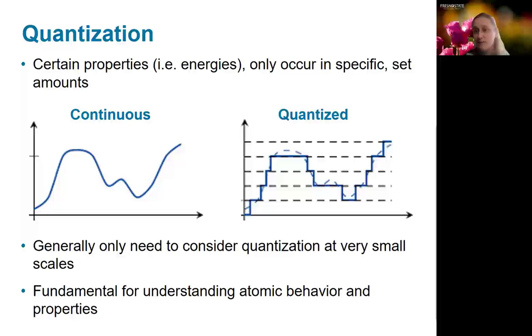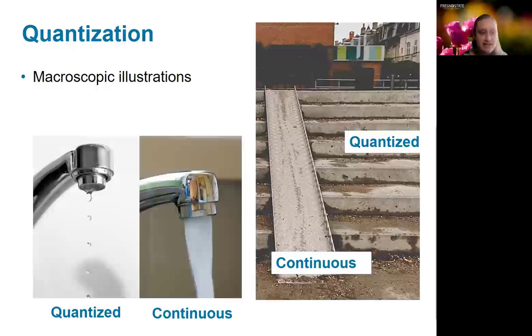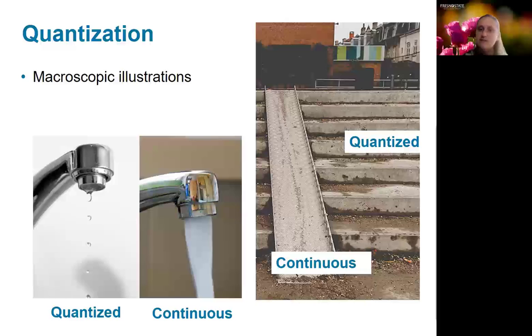And understanding quantization is really fundamental to understanding atomic behavior and properties. Just to give you a better sense of what quantization really means, we can think about a couple of macroscopic examples. So the first one here is a faucet, which is dripping. In that case, only certain volumes are allowed. You're not going to see sort of a continuous amount of water if it just drips. However, if you increase that flow, eventually it becomes continuous. So that's sort of showing that the transition between the quantized state where you have discrete drops to the classical state or the continuous state. Another illustration is the difference between a ramp and stairs. On a ramp, you can have any value of basically height above the ground, whereas on stairs, you're only going to be able to take them in discrete chunks.